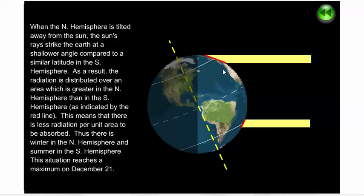Meanwhile, in the southern hemisphere, it's pointed more directly at the sun. The light is coming in more directly, and the heating power of the sun is stronger in the southern hemisphere. That's why when it's winter in the northern hemisphere, it's summer and warmer in the southern hemisphere.